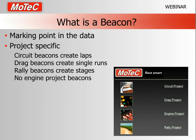So to start with: what is a beacon? Effectively it's a marking point in the data — a precise moment in time that we can take measurements from. Traditionally at a circuit race like a V8 Supercars or F1 race, it took the form of a transmitter on a pit wall and a receiver in the car. As the car passes the pit wall, the receiver picks up a signal and a point is marked in the data. Each time that happens a lap is created, and on our dashes lap times can be displayed.